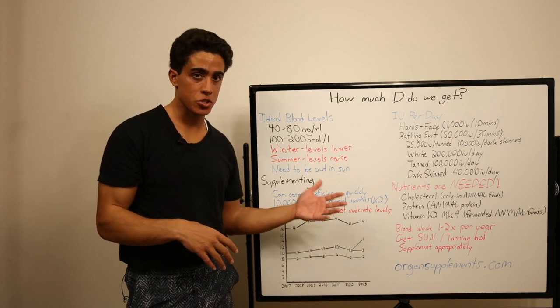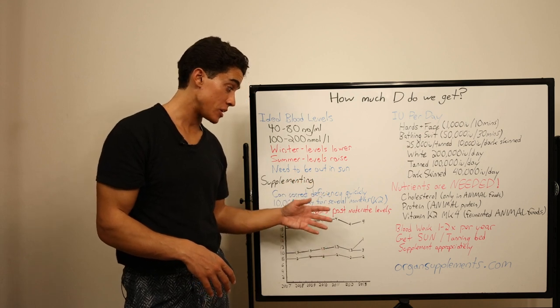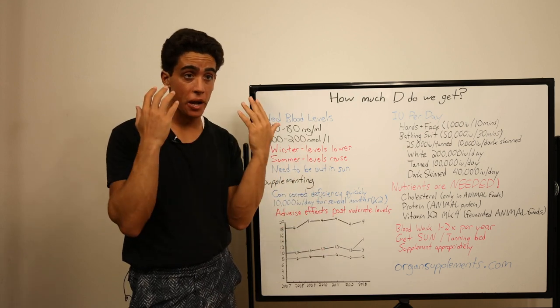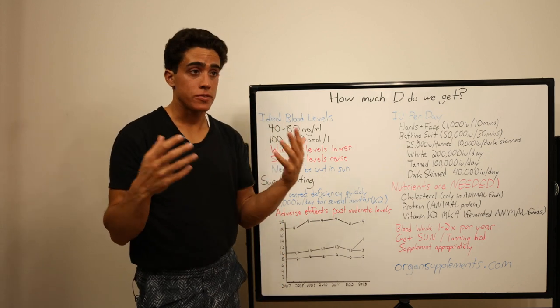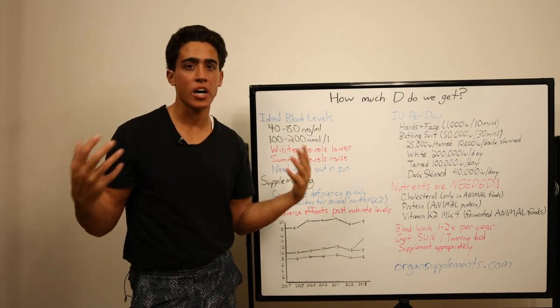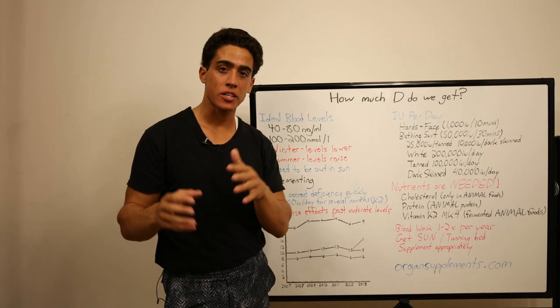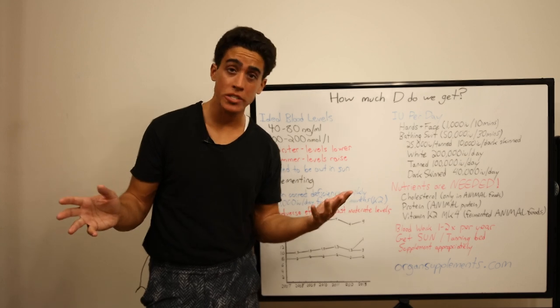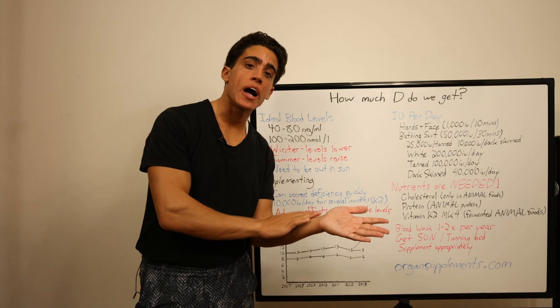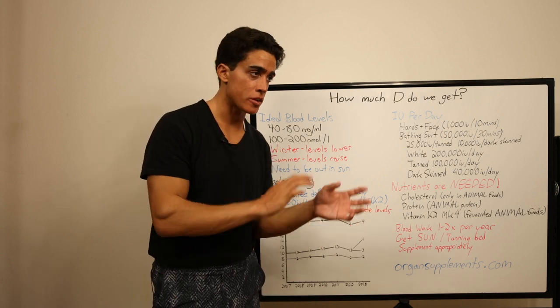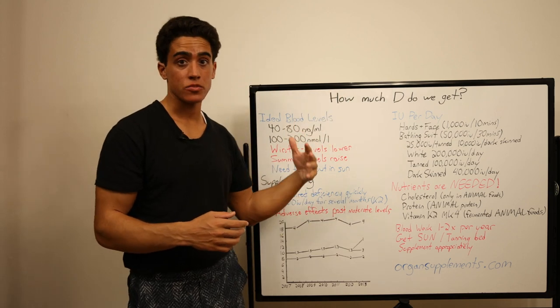But even like a short sleeve shirt and shorts would be drastic. If your hands and face is only 5% of your body, then your arms and your legs are 15, 20, 25%, it's so much higher. Now keep in mind, that's without sunscreen. We did a video on how toxic sunscreen is maybe five or six weeks ago now. But if you have sunscreen on your skin, you're not synthesizing vitamin D. So not only are there bad ingredients in sunscreen, it's blocking you from getting the vitamins from the sun.